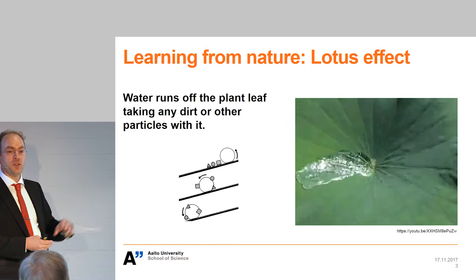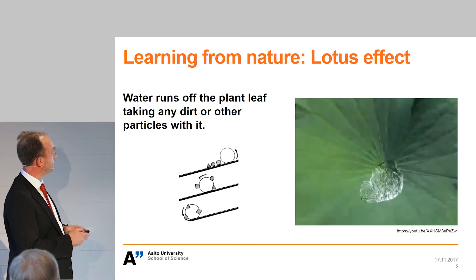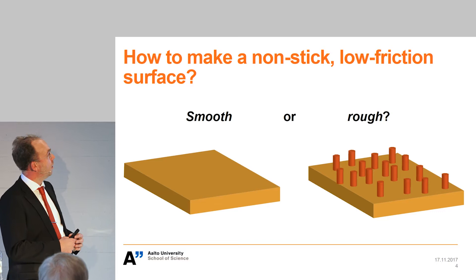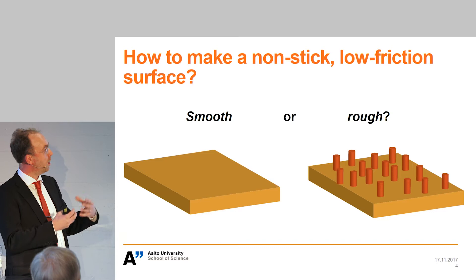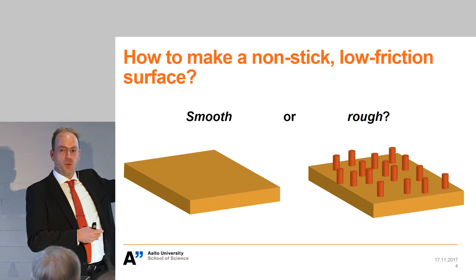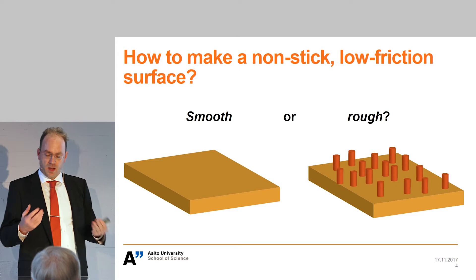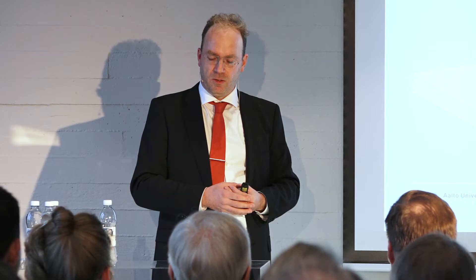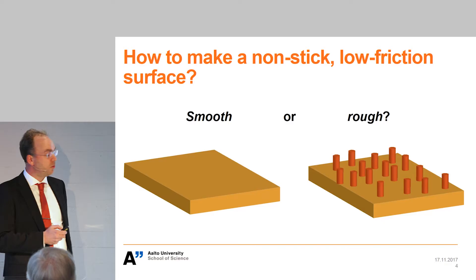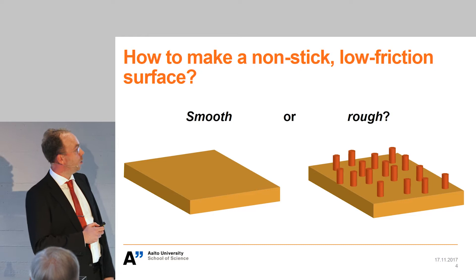So how do you make surfaces that do not stick or have low friction with water? Would it need to be smooth or rough? You would think that, like when treating wood, you use sandpaper to smooth it and decrease roughness. But for water, it is actually quite the opposite — we need to introduce surface roughness. To explain why, I need to tell you a little about surface tension phenomena.